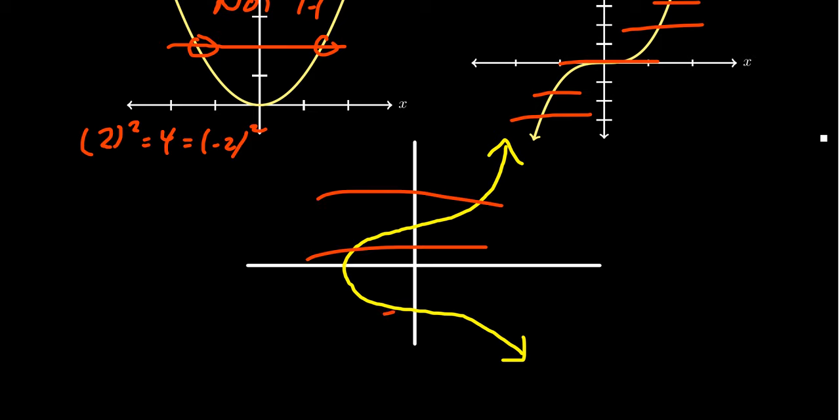So, you might be tempted to say that this is a one-to-one function because it passes the horizontal line test. Let me mention to you that this graph fails the vertical line test, so it's not a function. In order to be a one-to-one function, you must first of all be a function.